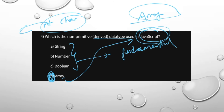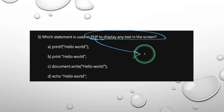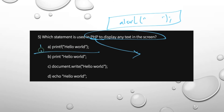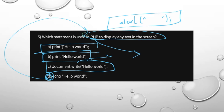In JavaScript, which statement is used to display text on the screen? In PHP, echo is used to display output. In JavaScript, document.write and alert can also display data types. The right answer here is echo for PHP.